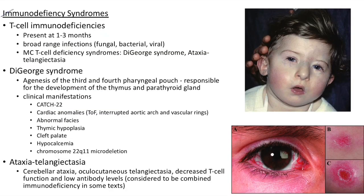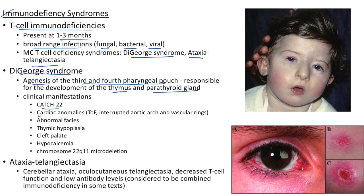Immunodeficiency syndromes: T-cell immunodeficiencies present at 1-3 months with a broad range of infections (fungal, bacterial, or viral). The most common T-cell deficiency syndromes are DiGeorge syndrome and ataxia telangiectasia. DiGeorge syndrome: agenesis of the third and fourth pharyngeal pouch responsible for thymus and parathyroid gland development. Features remembered by mnemonic CATCH-22: cardiac anomalies (TOF, interrupted aortic arch, vascular rings), abnormal facies, thymic hypoplasia, cleft palate, hypocalcemia — due to chromosome 22q11 microdeletion.